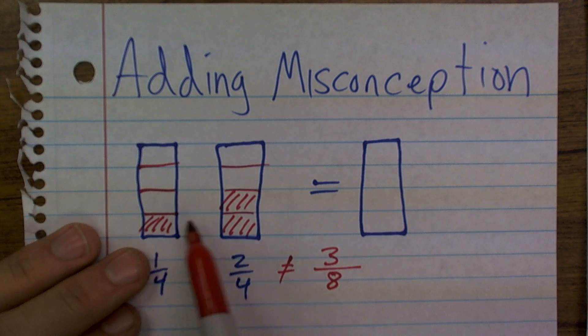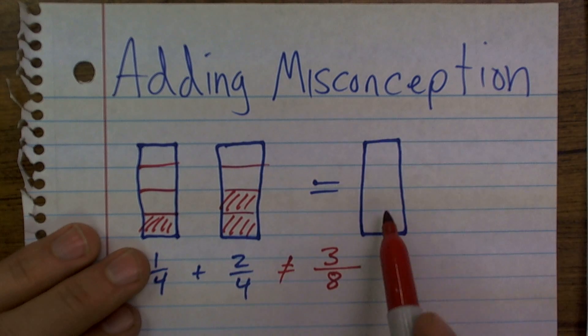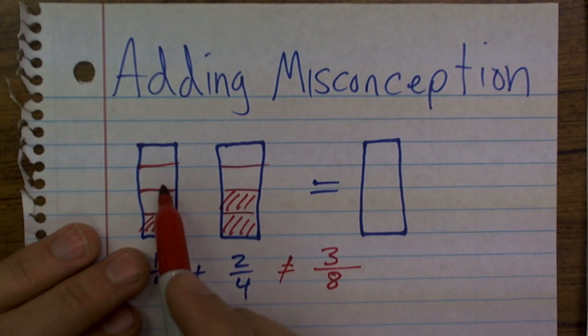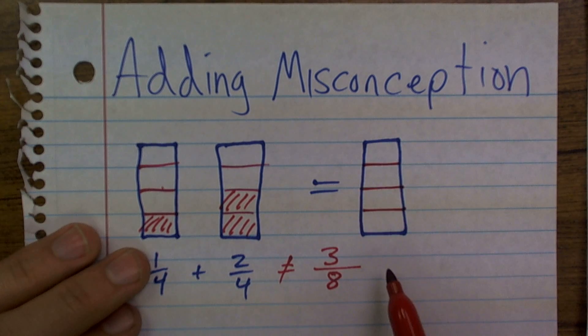So if I have one part plus another two parts, now I'm going to select a total of three parts. However, the whole does not change as far as how you're slicing up the parts. So it's still going to be in four equal sections.